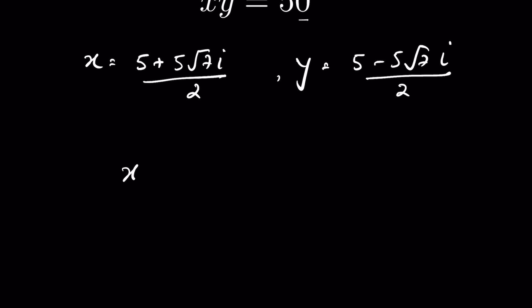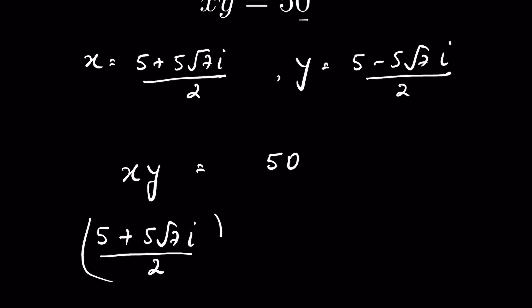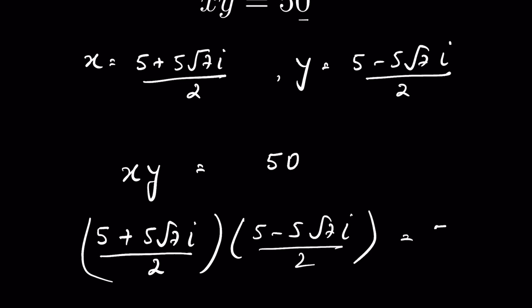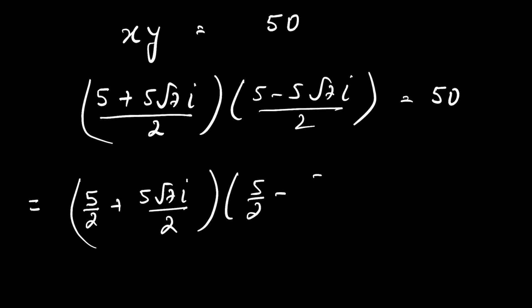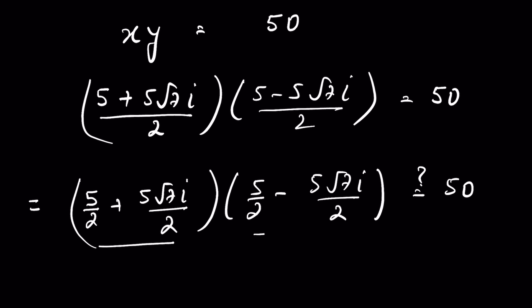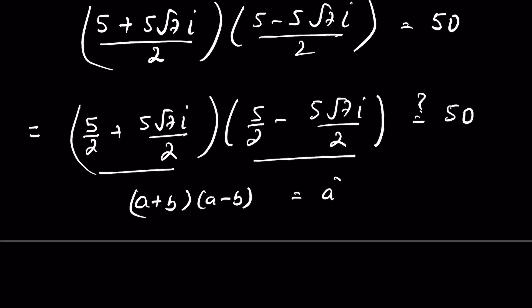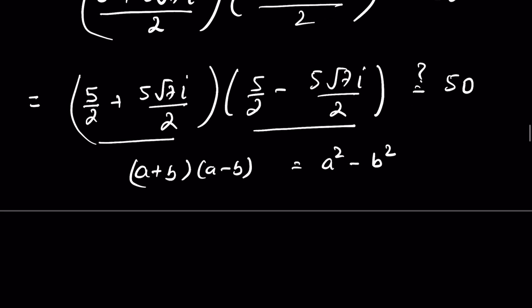Now x times y should equal 50. So (5 plus 5√7i)/2 times (5 minus 5√7i)/2 should equal 50. We can write this as (5/2 plus 5√7i/2) times (5/2 minus 5√7i/2), which is in the form of a plus b times a minus b, that is the difference of squares, so we write a squared minus b squared: (5/2)² minus (5√7i/2)².